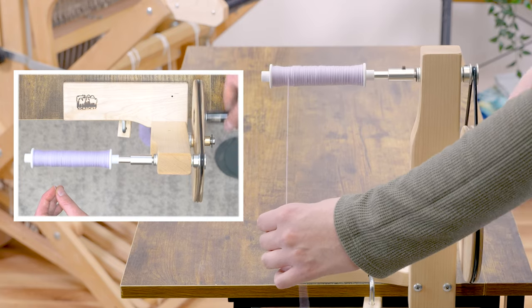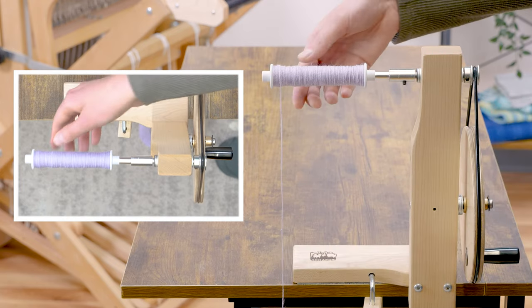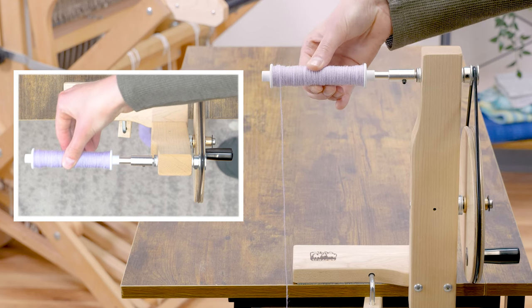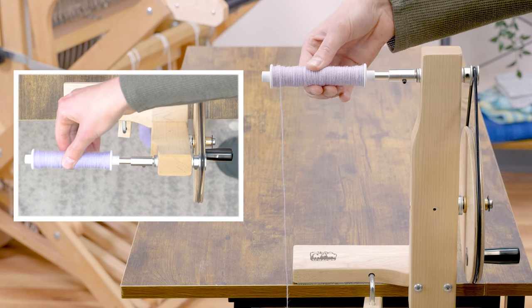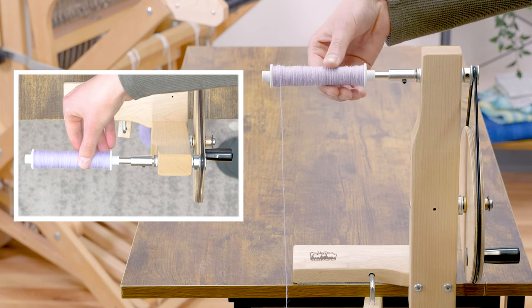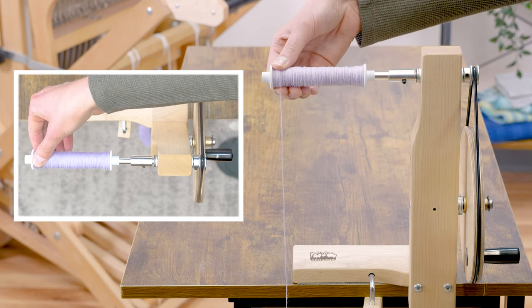If you feel the yarn and it squishes down a lot, that means you may want to practice pulling a little tighter next time. It is ideal if it isn't squishing down very much. This means you held the yarn with a good amount of tension and it will wind off nicely.